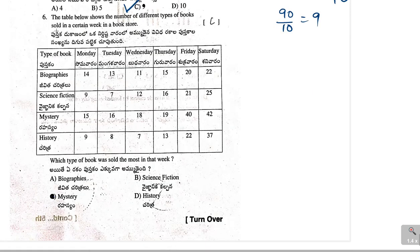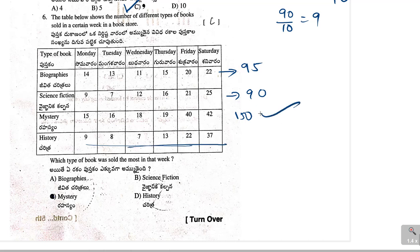Next, sixth one. The table below shows the number of different types of books sold in a certain week in a bookstore. Which type of book was sold the most in that week? We need to find out, suppose if you take biographies, we need to find out the total here. So, we need to calculate the sum. So, 14 plus 3 plus 11 plus 15 plus 20 plus 22, this is 85. Then, that will be 90. Here, 150. This is 150. So, here these numbers looks like somewhat smaller. So, 150 is the largest one. Mystery, mystery. Yeah, option C is correct.